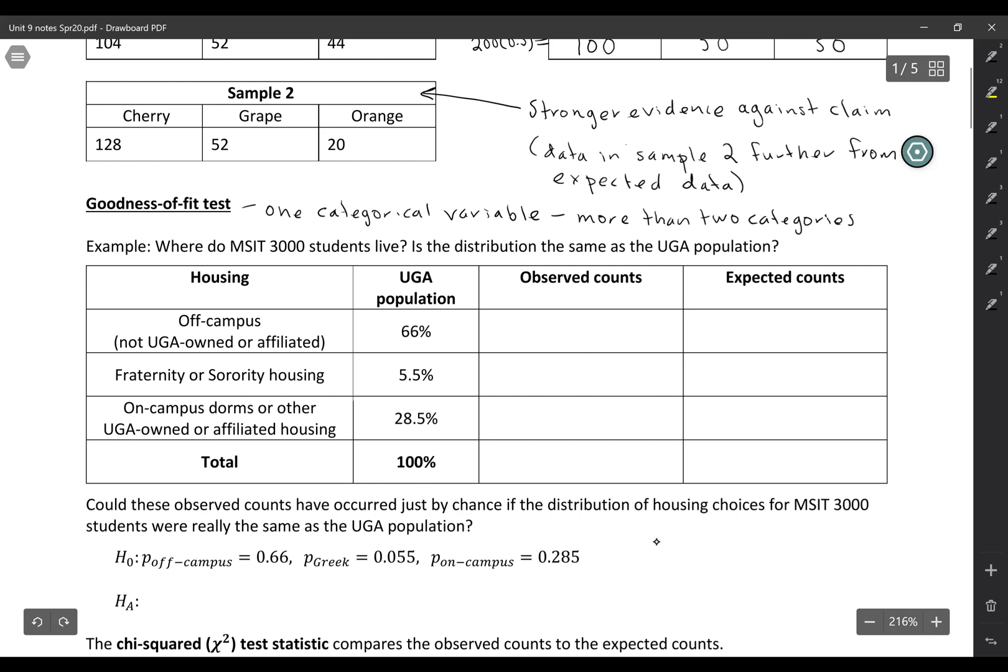So here's another example. This is some data that I collected actually last year. Obviously we couldn't collect it since we're not together this time. But the question is, where do MSIT 3000 students live? Is the distribution the same as the UGA population?